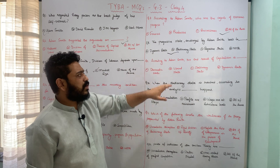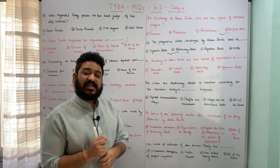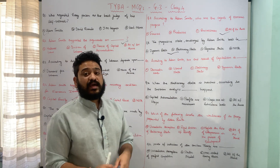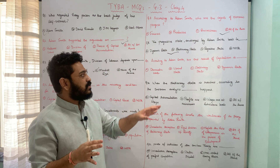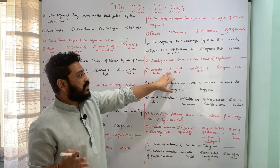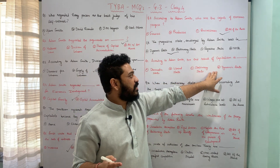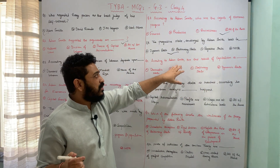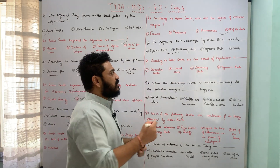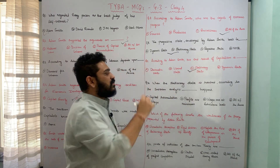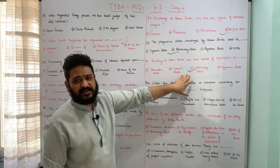The next question: according to Adam Smith, the end result of capitalism is what — A democratic state, B liberal state, C stationary state, or D dynamic state? According to Adam Smith, the end result of capitalism is always stationary state. Option C is the correct answer.